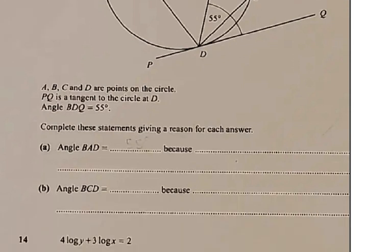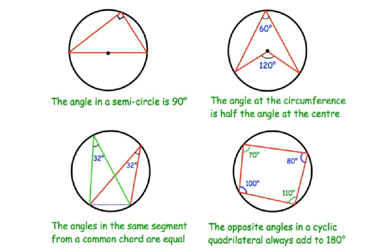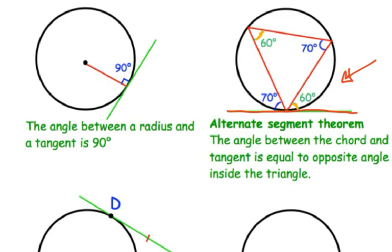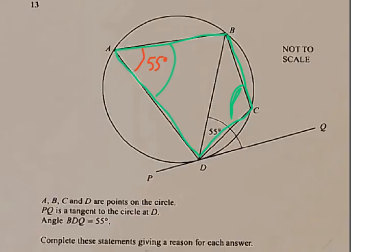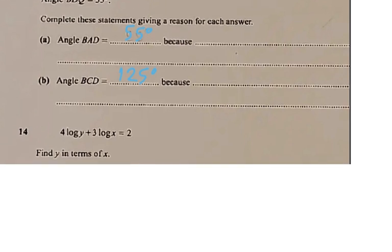Then you're doing angle BCD, and that is an example of a cyclic quadrilateral where the opposite angles of a quadrilateral, where every vertex of the quadrilateral is on the circumference of the circle, they add up to 180 degrees. That's actually quite straightforward. If that's 55 degrees, then to get the opposite angle you're just subtracting from 180: 125 degrees. Because opposite angles in a cyclic quadrilateral add up to 180 degrees.